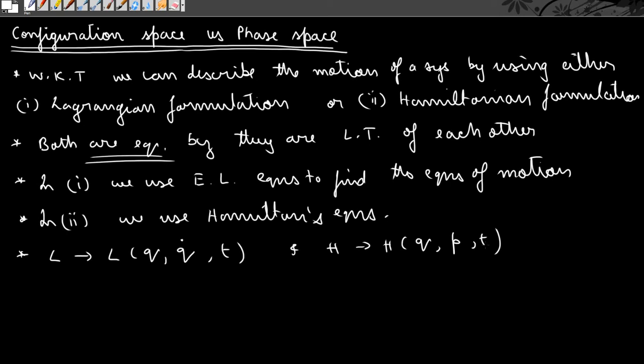The system is going to occupy different states as it traverses a path. If you consider the motion of a system, it is basically traversing a path wherein its mechanical state changes. The way we describe the mechanical state of a system will depend on whether we are using the Lagrangian or the Hamiltonian formulation — and that is what configuration space and phase space are used for.